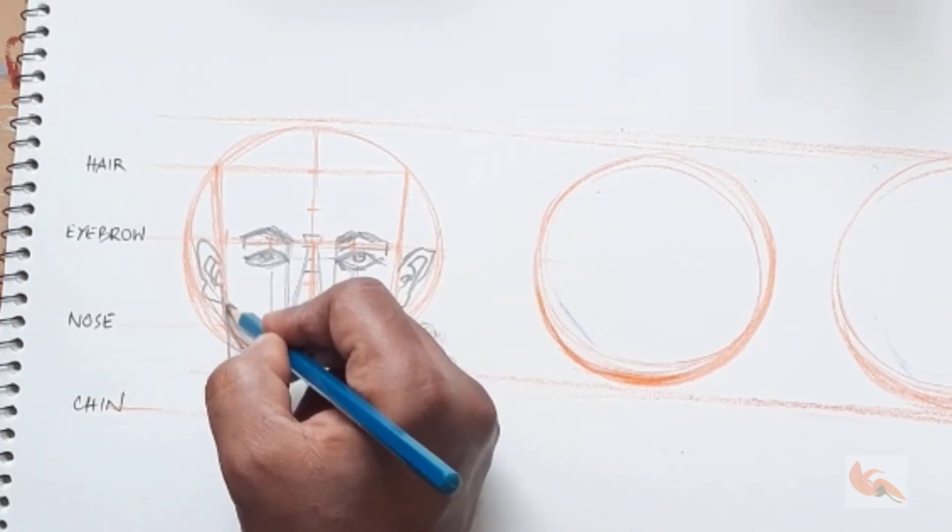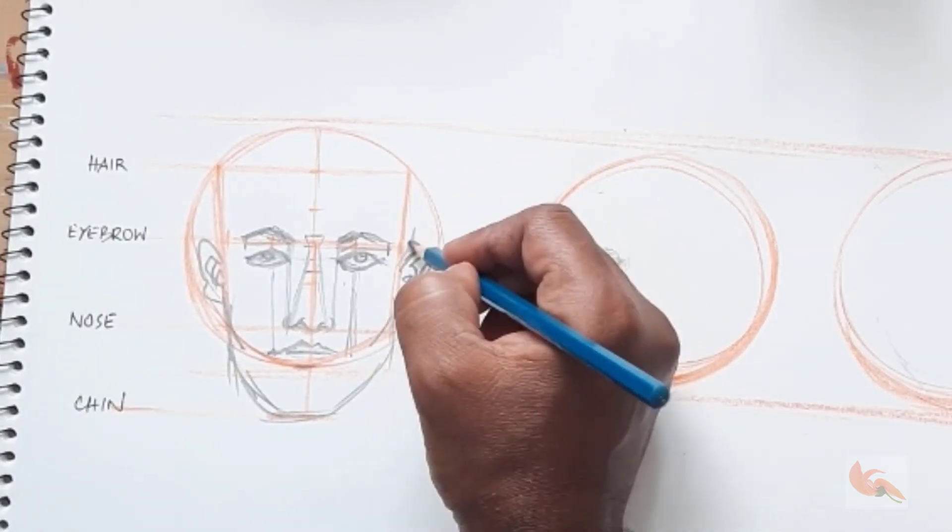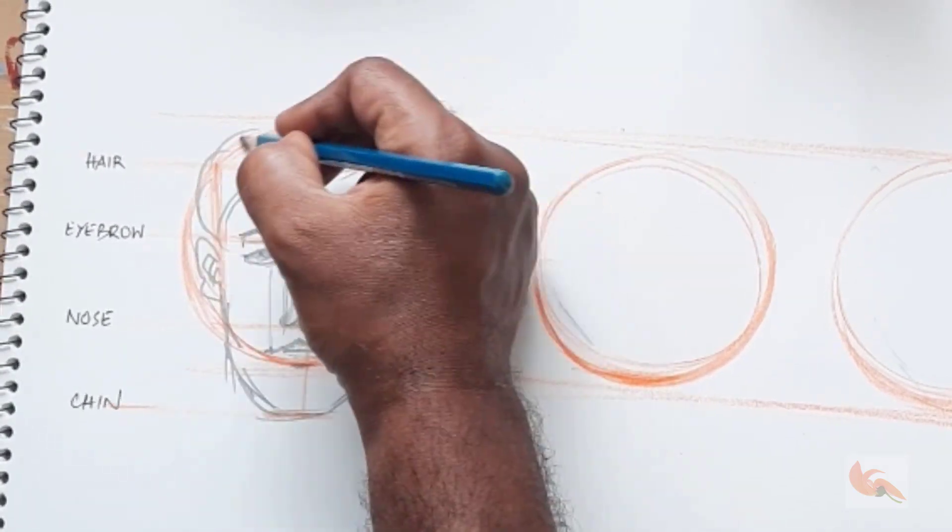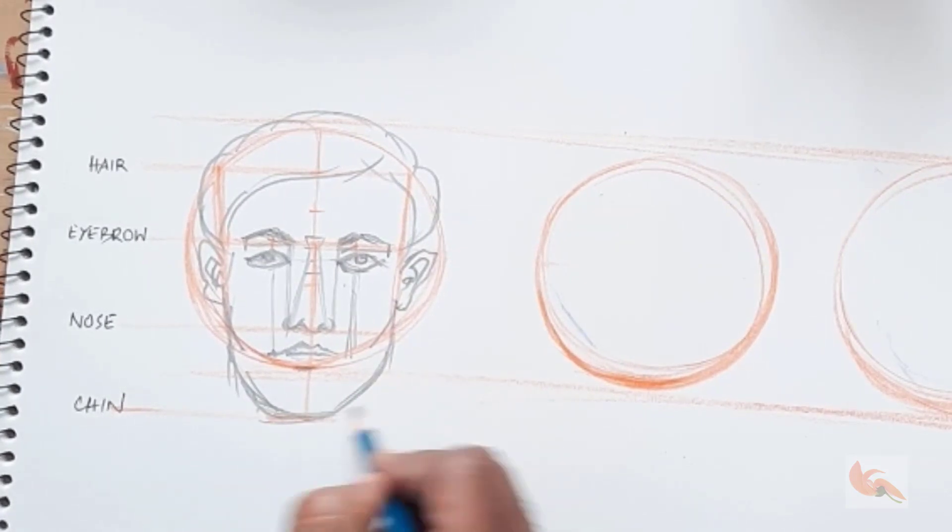Now by extending the lines of the side and giving shape to meet up the chin line, we will get the jaw line. Now finish the drawing with the cheeks, chin, neck and the top of the head including hair.